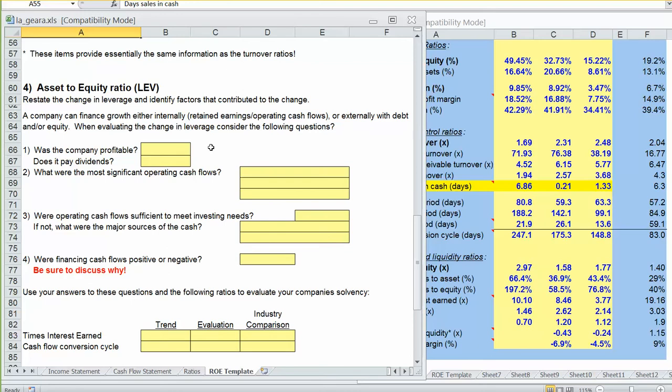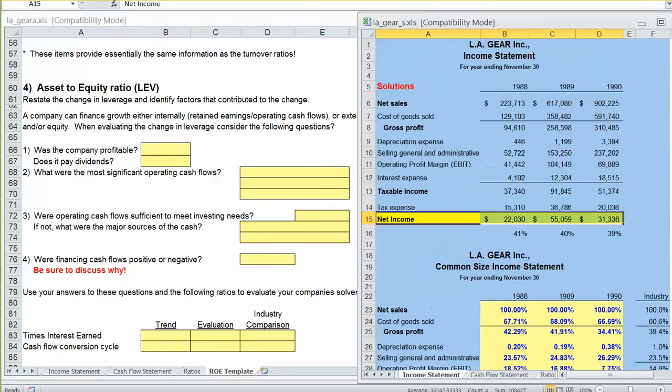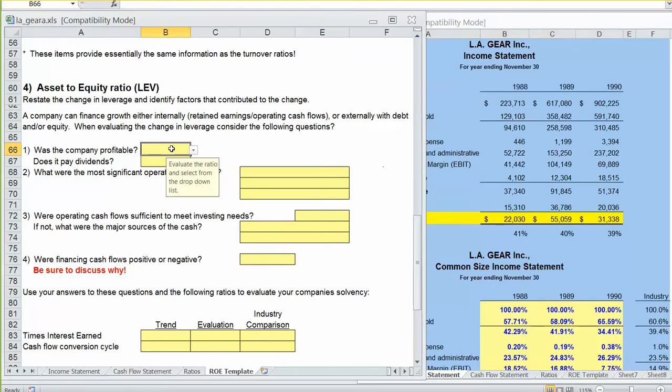Some of the questions we're going to consider: first, is the company profitable? To find out if it's profitable, we're going to want to look at its income statement. We can see, looking at the income statement, that LA Gear is indeed profitable. It's had profits in each of the last three years.